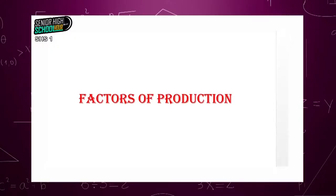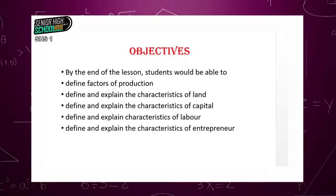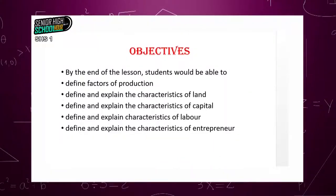Factors of production. By the end of this lesson, I will expect you, the students, to be able to define the term factors of production. You should also be able to define and explain the characteristics of land, the characteristics of capital, the characteristics of labor, and lastly, define and explain the characteristics of entrepreneur.